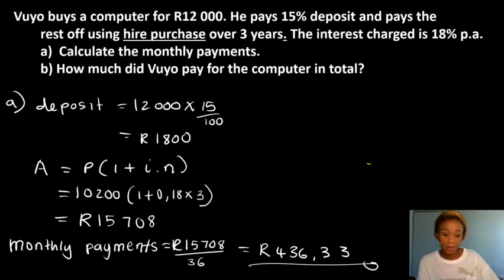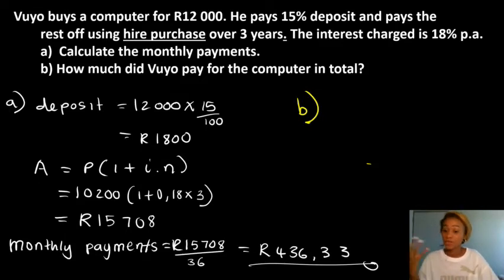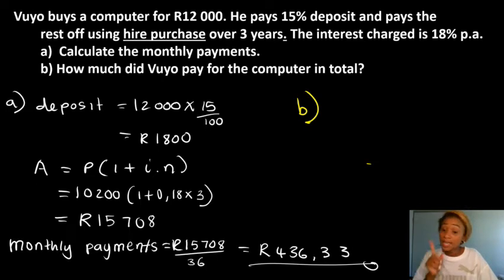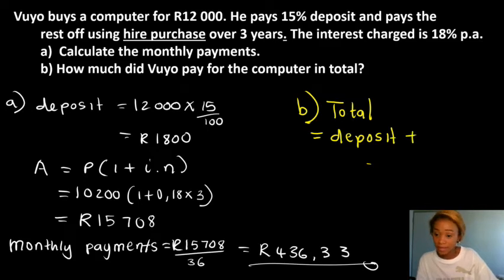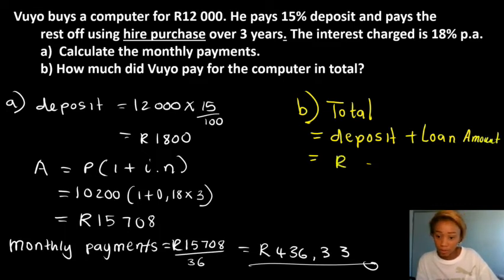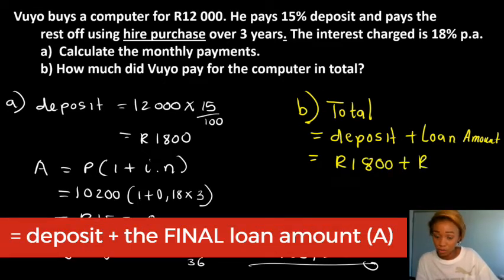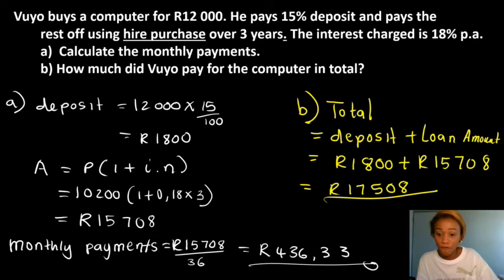Now, how much did Vuyo pay for the computer in total? He can't just say he paid 15,708, because he also paid a deposit before that. So the total is the deposit of 1,800 plus the loan amount of 15,708, which means Vuyo actually paid 17,508 for this computer.